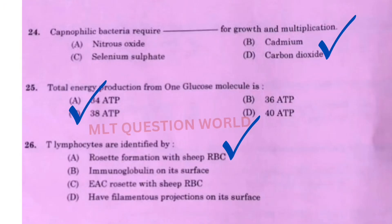Next question: Capnophilic bacteria require dash for growth and multiplication. The right answer is option D, carbon dioxide. Next question: Total energy production from one glucose molecule — the right answer is option C, 38 ATP molecules.